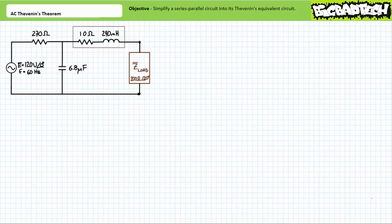Good day and welcome to Big Bad Tech. I'm your instructor, Jim Pytel, and today's topic of discussion is Thevenin's Theorem as Applied to AC Circuits. We'll additionally briefly examine Norton's Theorem as Applied to AC Circuits. Our objective is to learn to simplify a complicated AC circuit into a Thevenin's equivalent.